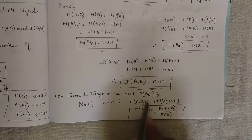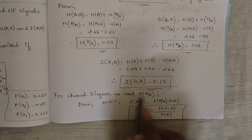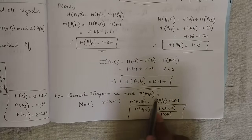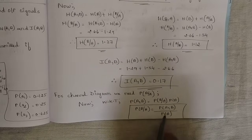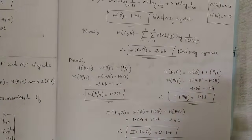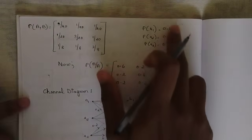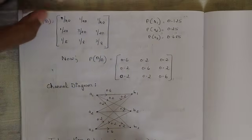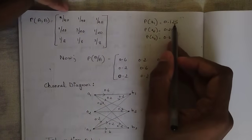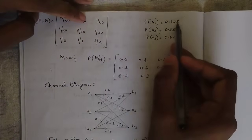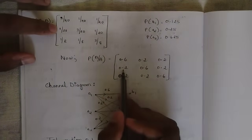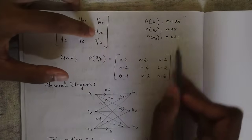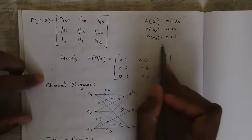To draw the channel diagram we need the channel matrix P(B|A). Using the relation P(A,B) = P(B|A) × P(A), we get P(B|A) = P(A,B) / P(A). Divide each row of the JPM by the corresponding P(A): 3/40 ÷ 0.125 = 0.6, 1/40 ÷ 0.125 = 0.2, 1/40 ÷ 0.125 = 0.2; next row 1/20 ÷ 0.25 = 0.2, 3/20 ÷ 0.25 = 0.6, 1/20 ÷ 0.25 = 0.2; and similarly for the third row.